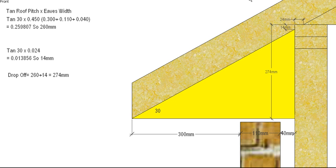So there you go, there's how we work out the drop-off for both the truss and a conventionally cut roof with a bird's mouth.